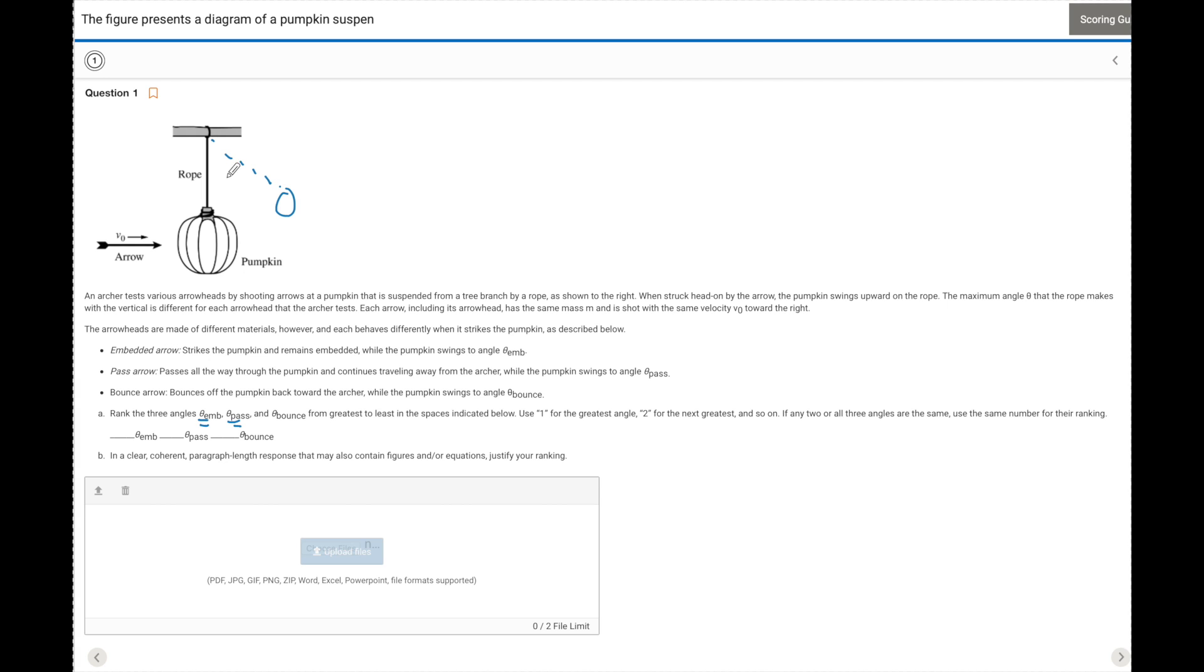They want to know how far is it going to swing and which one's going to lead to the greatest theta. We are looking at a transfer of momentum. Because in this case, with no outside forces acting at the collision, their momentum is going to be conserved. So in these three situations, whichever pumpkin has the greatest final momentum, that's going to be equal to the greatest theta.